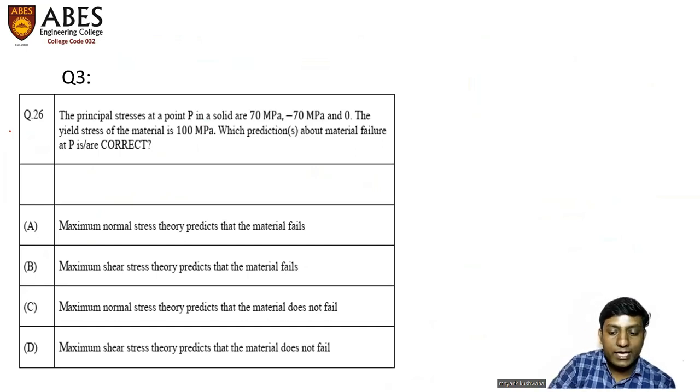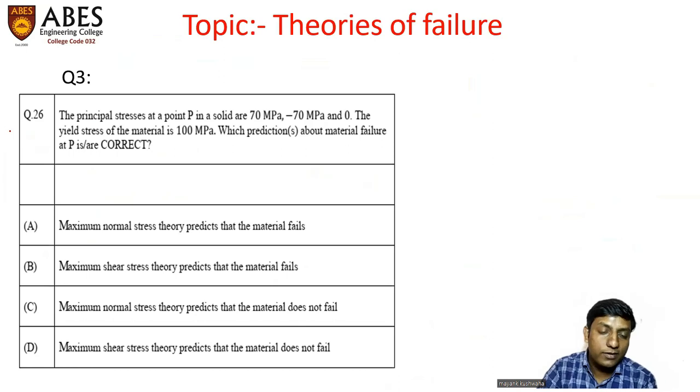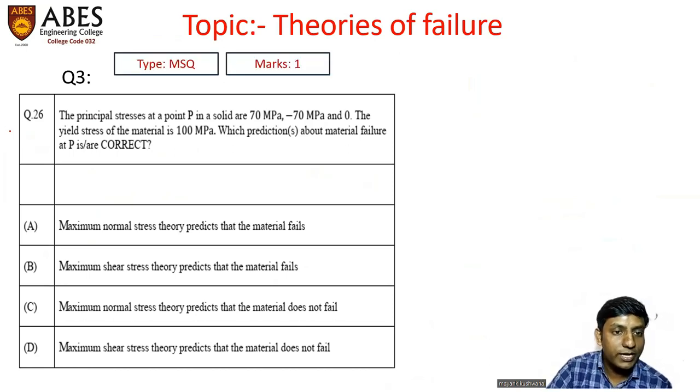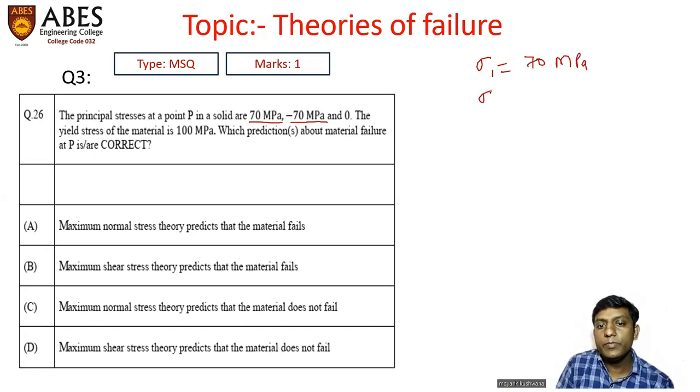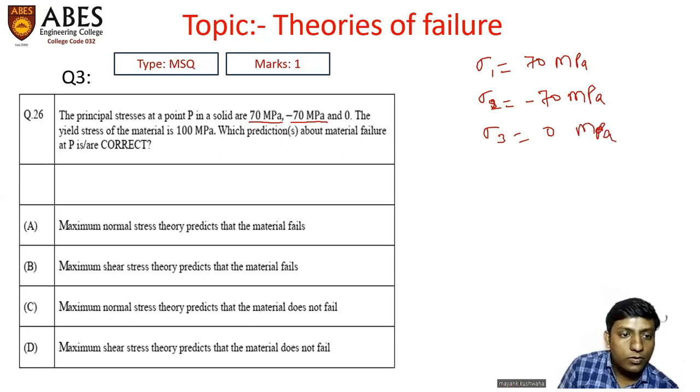Next question belongs to theories of failure, which again is a very important topic. Again, it is MSQ type, marks is still one. The question says that principal stresses at point P in a solid are 70 MPa, minus 70 MPa, and 0. So maximum value is 70 MPa, minimum value is minus 70 MPa, and the third stress is 0 MPa. Yield stress is given to us as 100 MPa. Which predictions about material failure at P are correct?